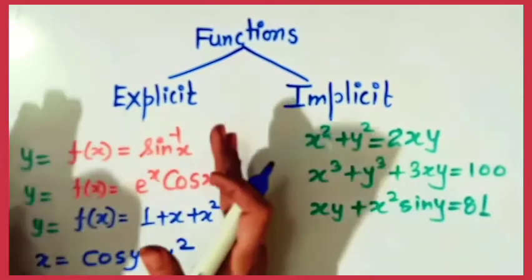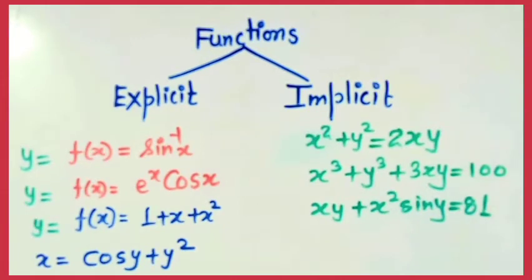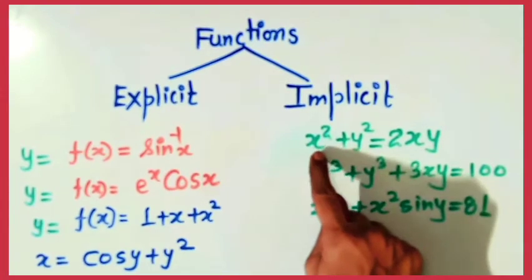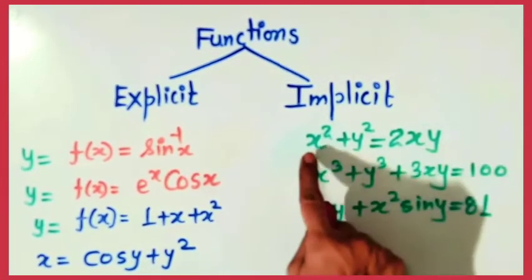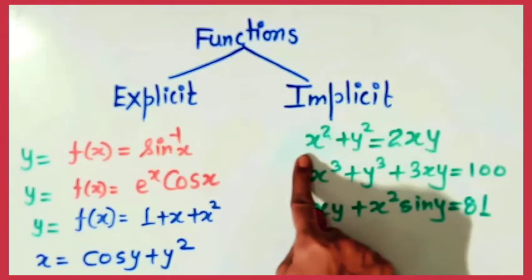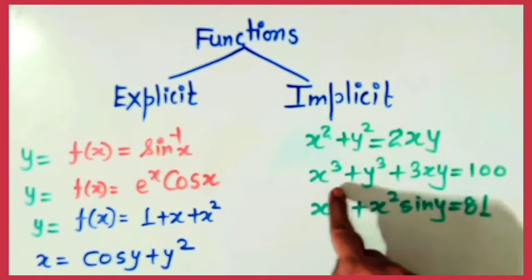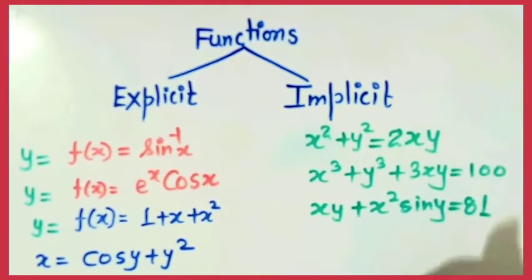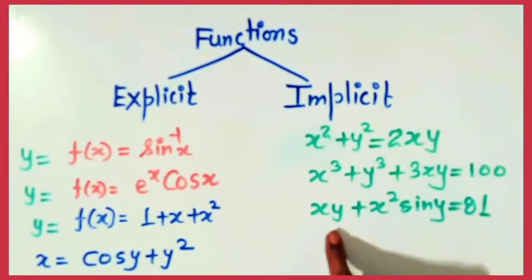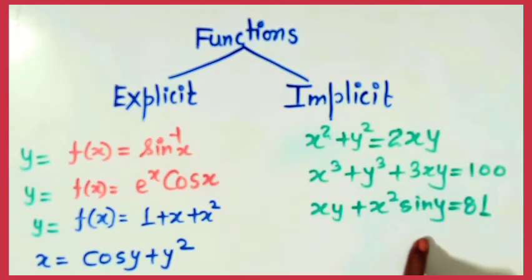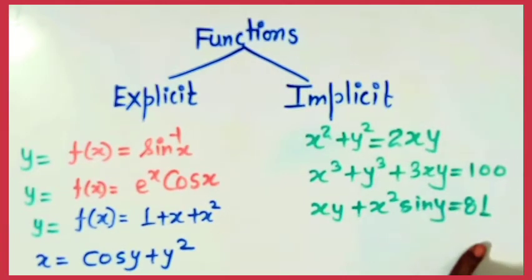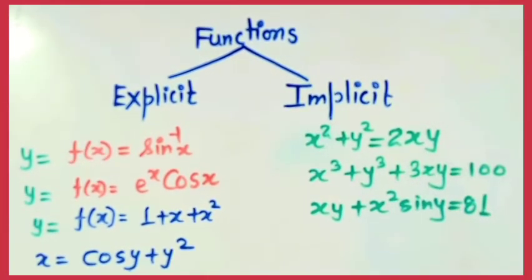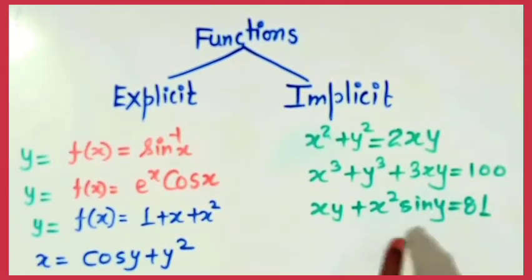We have studied how to differentiate these functions. Now let us discuss what an implicit function is. See this example: x squared plus y squared is equal to 2xy. Neither x is solved in terms of y nor y is solved in terms of x. In all these examples, x and y are not solved, but a relation in x and y is given. Such functions are called implicit functions, or such equations are called implicit equations.